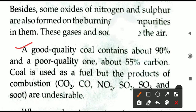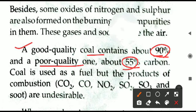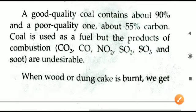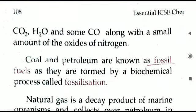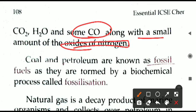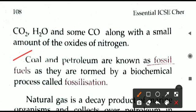Good quality coal contains around 90% carbon; poor quality coal contains only about 55% carbon. More carbon means higher calorific value; less carbon means less calorific value. Coal is used as a fuel, but the products of combustion include CO, CO₂, NO₂, SO₂, and SO₃ — all undesirable. Coal is not recommended for normal use as it causes a lot of air pollution. Similarly, burning wood or dung also produces carbon monoxide and oxides of nitrogen like NO₂, which cause pollution.